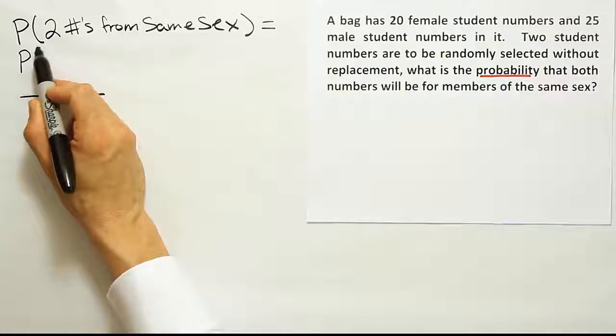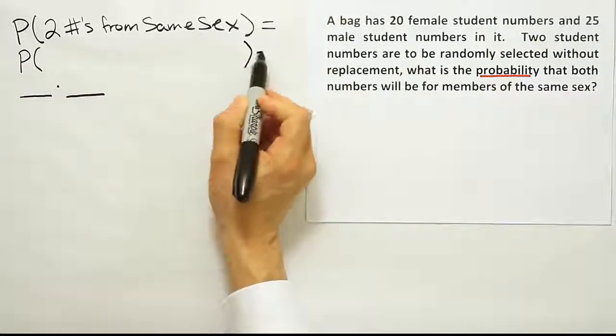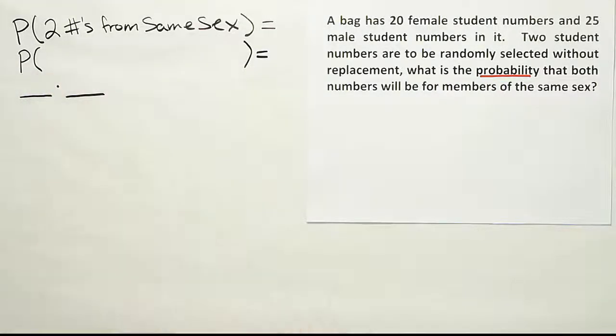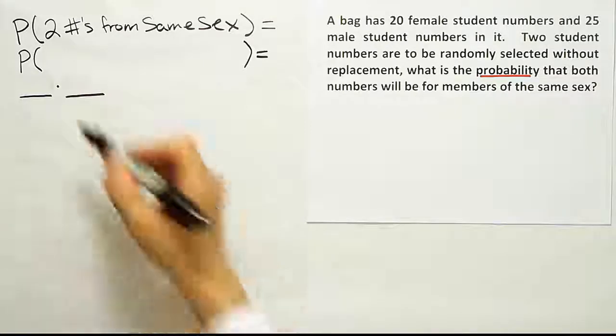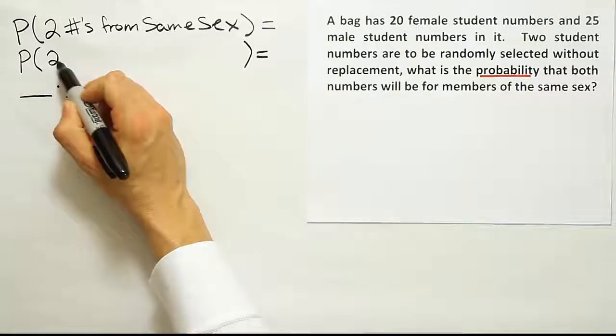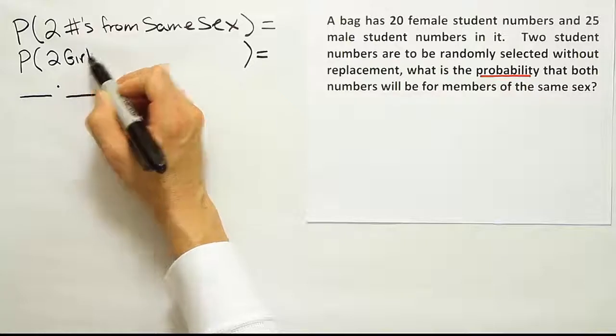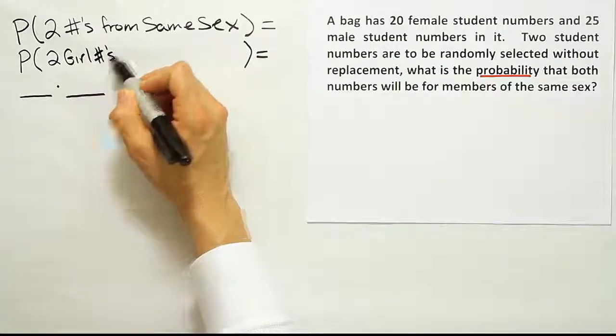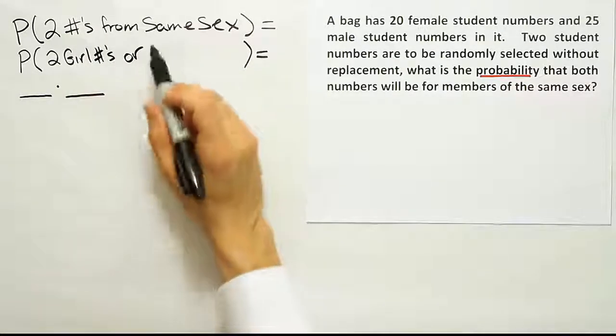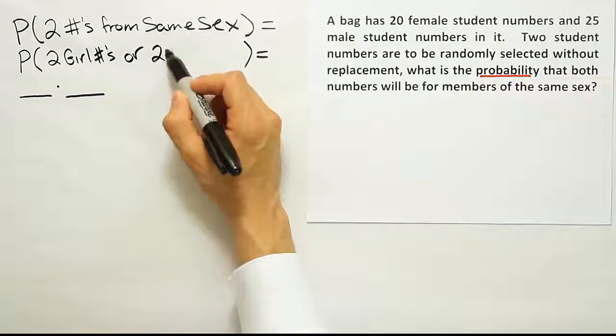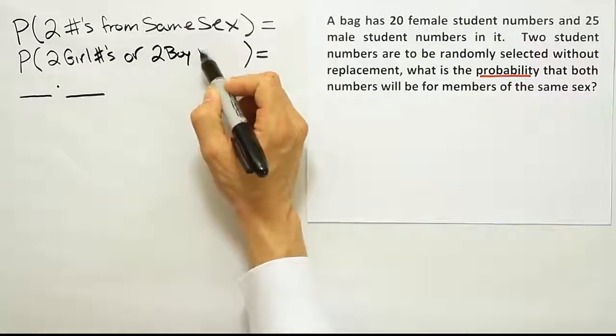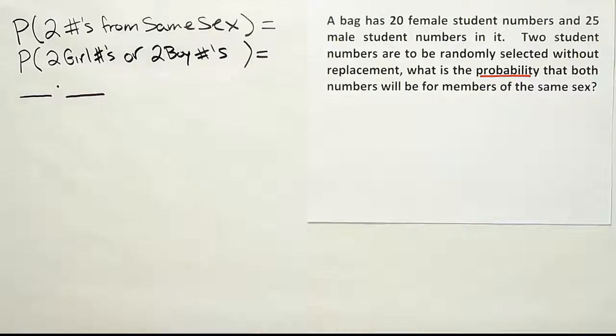So I'm going to write the probability of, and I'm going to think about how does it actually turn out that they're both the same sex? Well, the answer is that you have, say, two girl numbers, right? Or the other way you can turn out to have the same sex is if you have what? Two boy numbers. Those are the two ways that we end up having the same sex selected.